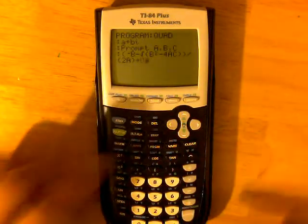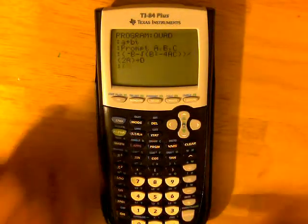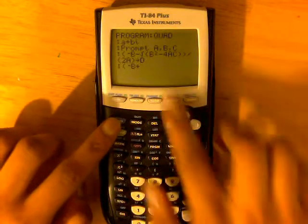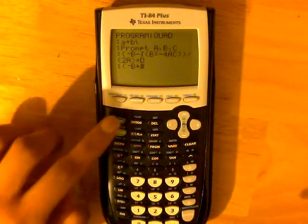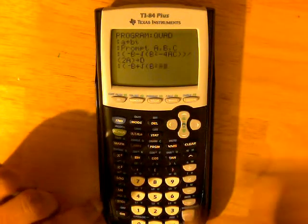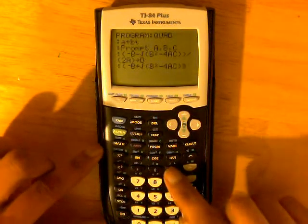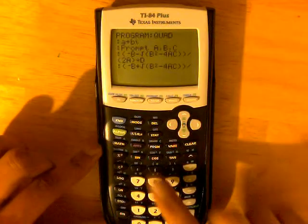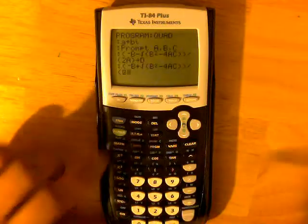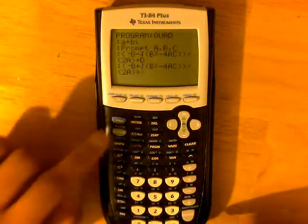And then enter it one more time, and then, parentheses, negative B plus, this one's plus, that one's negative, plus square root of Alpha-B squared, minus 4, Alpha-A, Alpha-C, end parentheses, another end parentheses, divided by 2 A, so 2 A, and then another end parentheses, and then we're going to be storing this one into E.